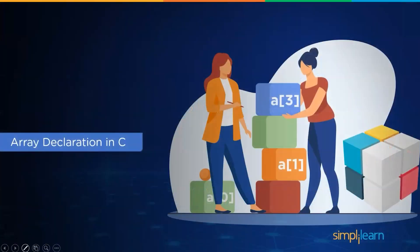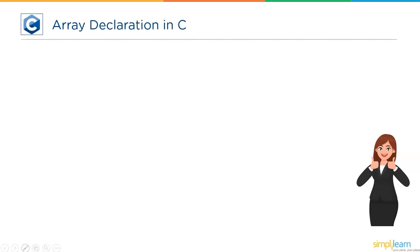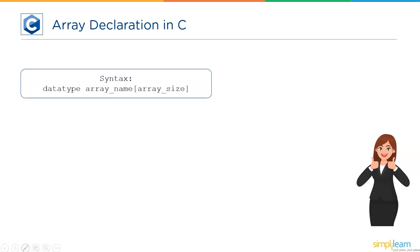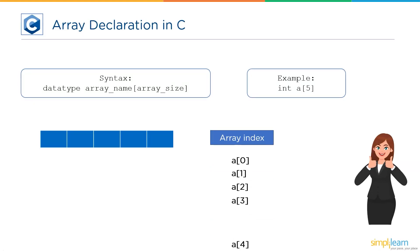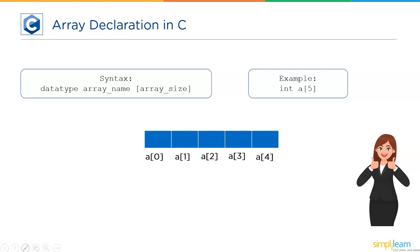Moving ahead, let's understand array declaration in C. Array declaration is similar to variable declaration, but in the array declaration we also mention the array size. The syntax is: data type, followed by array name and array size. For example, the data type could be int, double, float, char, etc. In this example, the data type is int, the array name is 'a', and the size of the array is 5. Once declared, memory is allocated as per the array size. In arrays, the index starts from 0 to n-1. So to store 5 elements, the index starts from 0, then 1, 2, 3, and 4 — always 1 less than the mentioned array size.